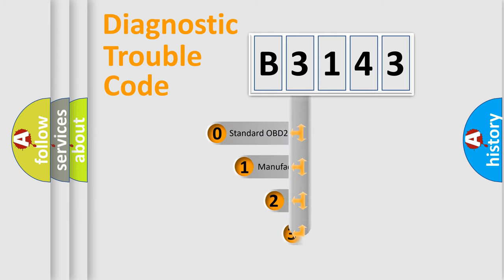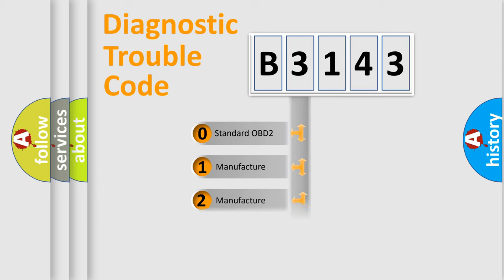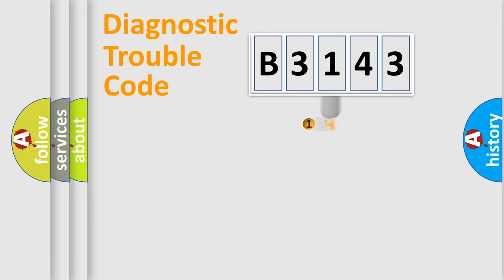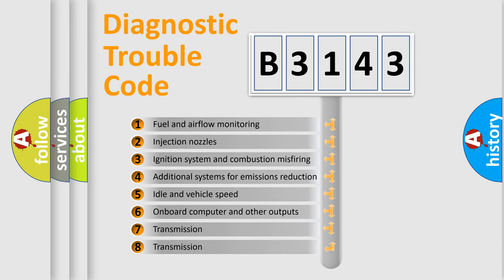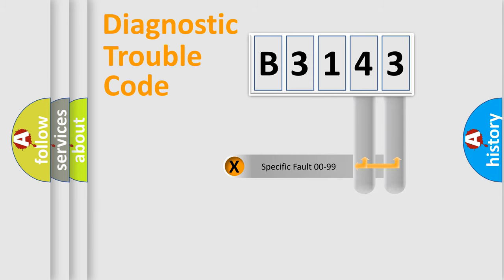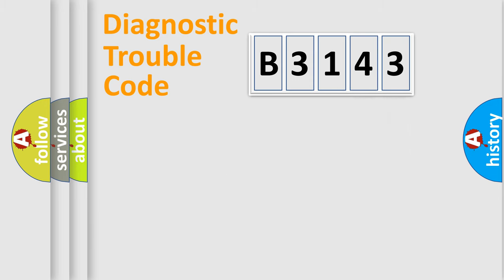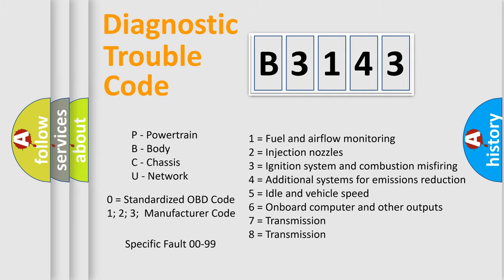This distribution is defined in the first character of the code. If the second character is expressed as zero, it is a standardized error. In the case of numbers 1, 2, or 3, it is a manufacturer-specific error expression. The third character specifies a subset of errors. The distribution shown is valid only for the standardized DTC code, and only the last two characters define the specific fault of the group.